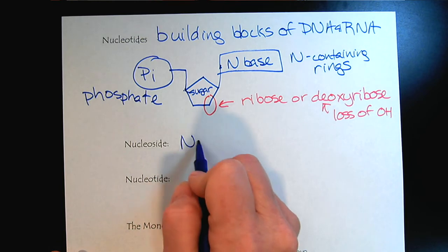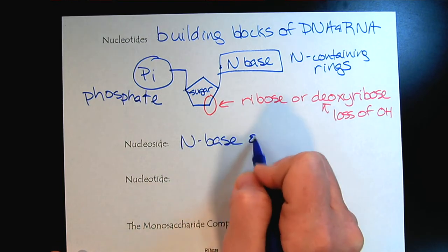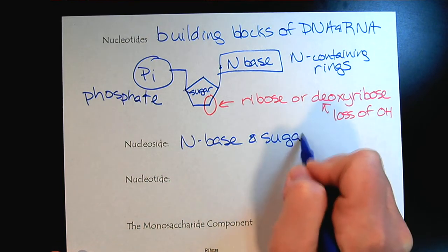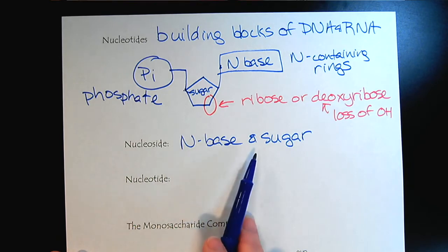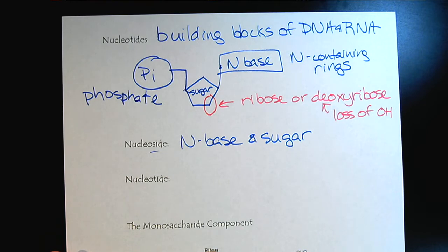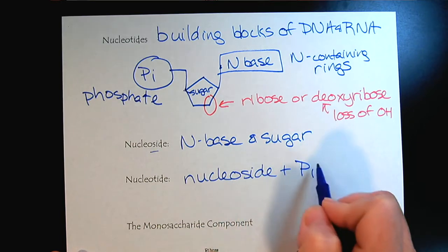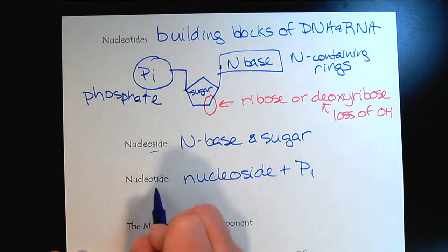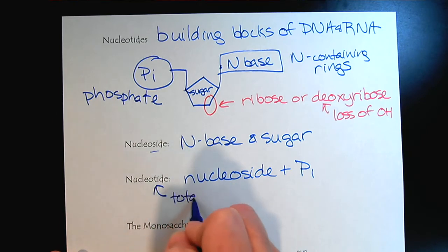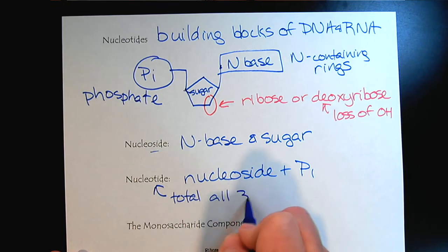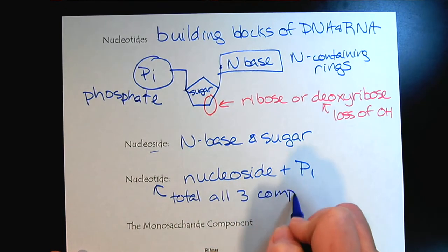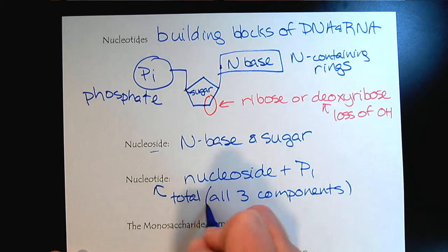Each nucleotide has these three components. The nitrogenous base and the sugar are often talked about by themselves, and in this case we call them a nucleoside. However, when we take the nucleoside and also add the phosphate group, that's the nucleotide - all three components.